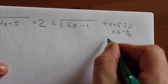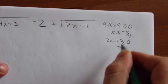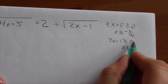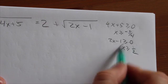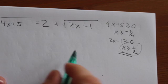And then over here 2x minus 1 has to be greater than or equal to 0. I'll do this quickly here. x has got to be greater than, bring the 1 over, divide by 2, so 1 half. So right now the overarching restriction here is x has to be greater than 1 half.